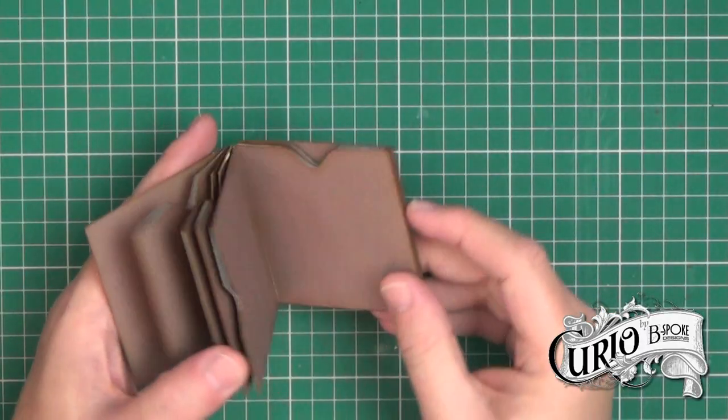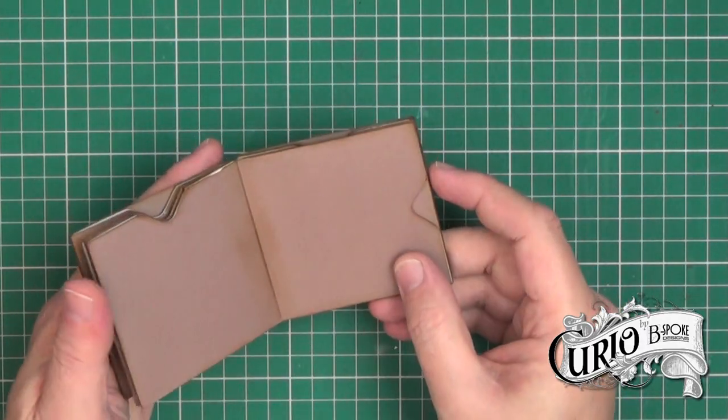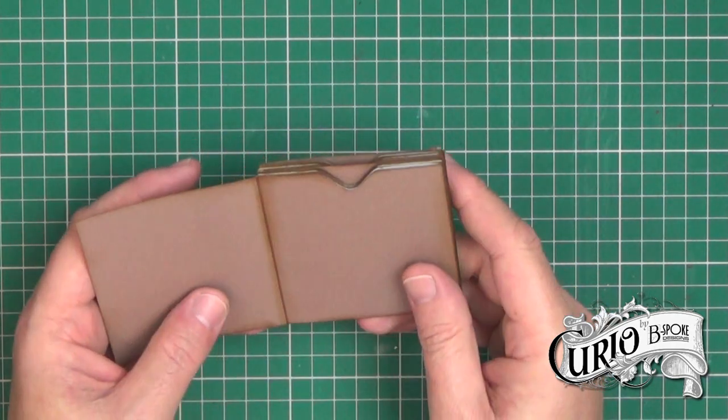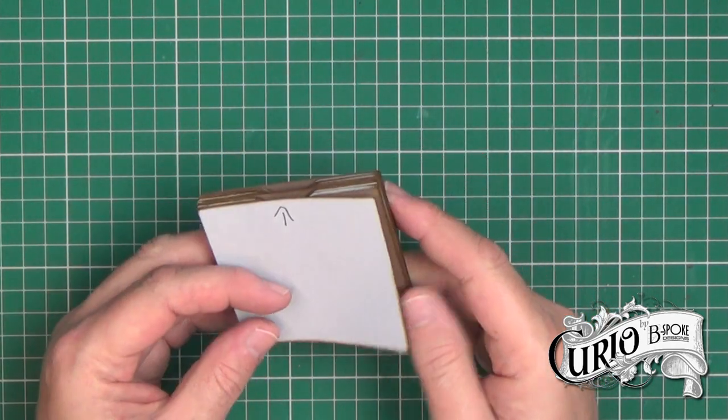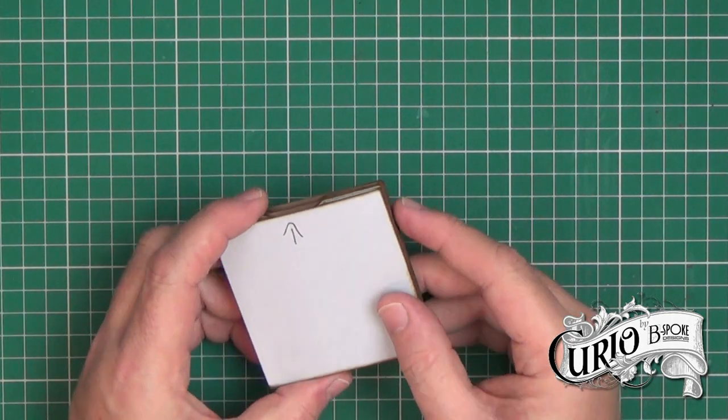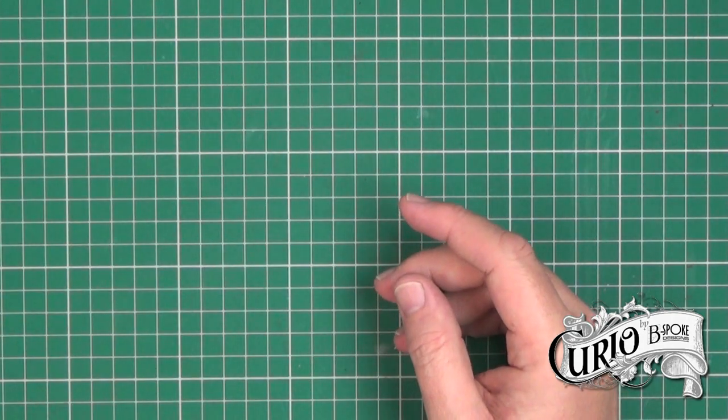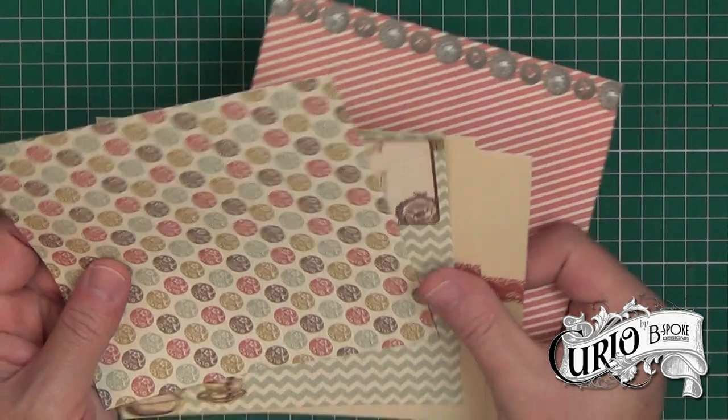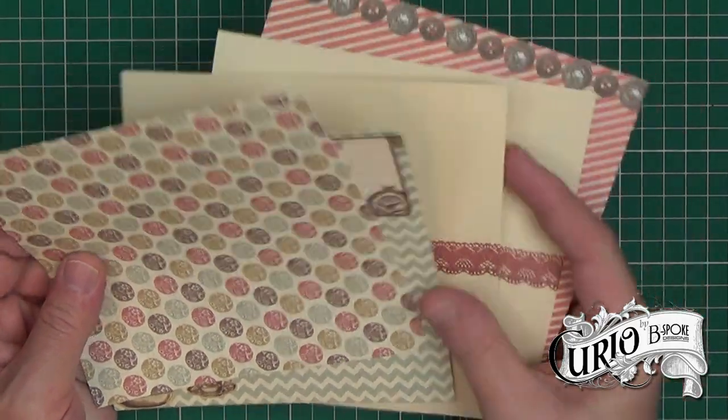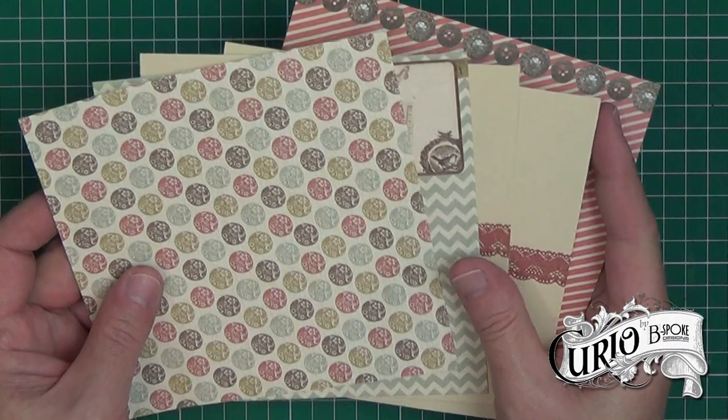So now we have our basic mini album and you can decorate this. I'm going to decorate mine with scrapbooking papers and to do that I'm using a selection of six by six papers and you're going to need at least four of these.